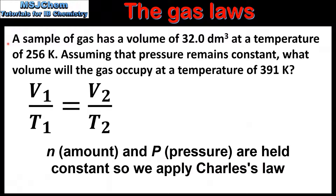In our next example we have a sample of gas with a volume of 32.0 cubic decimetres at a temperature of 256 kelvin. Assuming that pressure remains constant, what volume will the gas occupy at a temperature of 391 kelvin? To solve this we'll use this equation, which is Charles' law.